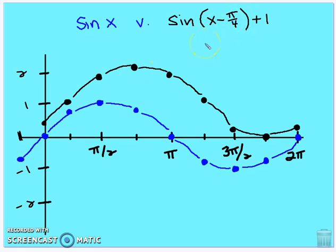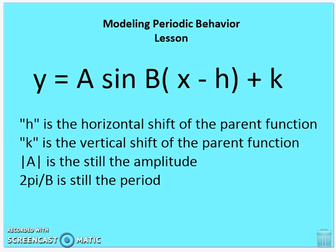Now we're going to relate that to a formula for transforming the original parent functions sine of x and cosine of x to a transformed trigonometric function. That formula is y equals a times sine of b times (x minus h) plus k. We've already established that a is the amplitude, and b has a relationship to the period where two pi over b equals the period.